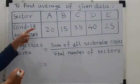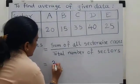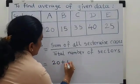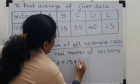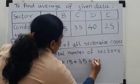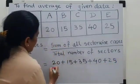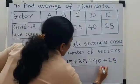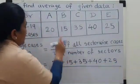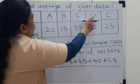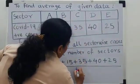Sum of all sector wise cases. I have to add all these numbers which is 20 plus 15 plus 35 plus 40 and plus 25 upon 1, 2, 3, 4, 5. There are total 5 sectors.